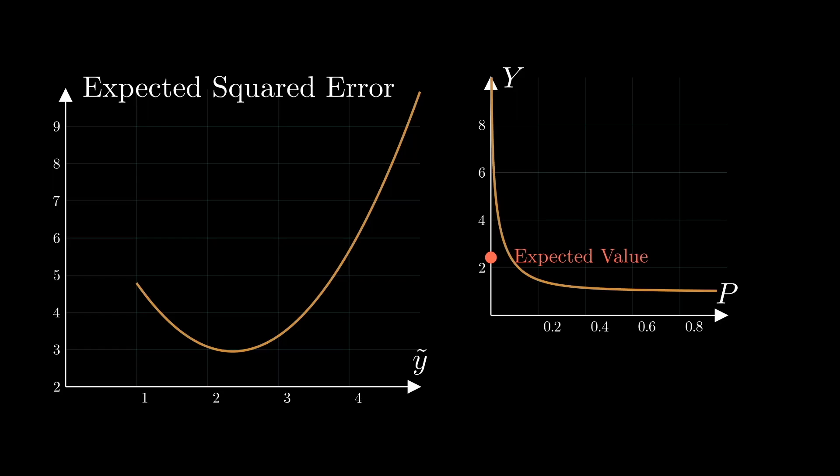Recall the underlying distribution for the first test day that we started from. In the left plot, find the point with y tilde equal to the expected value of that distribution. You see that the point corresponds to the minimum of the expected squared error.